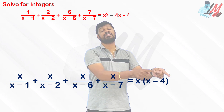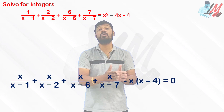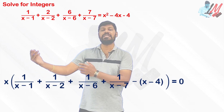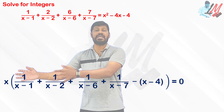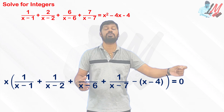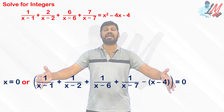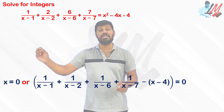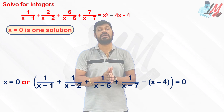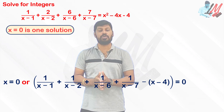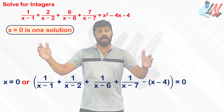The right-hand side is x(x−4). Transposing and factoring out x gives x times a big bracket equal to zero. So either x = 0 or that bracket equals zero. If x = 0, this is one integral solution for the given equation.